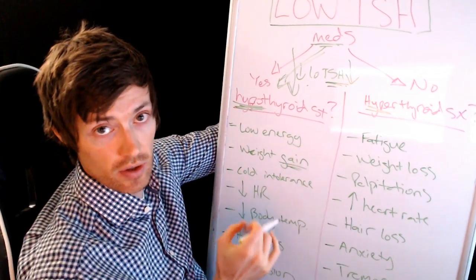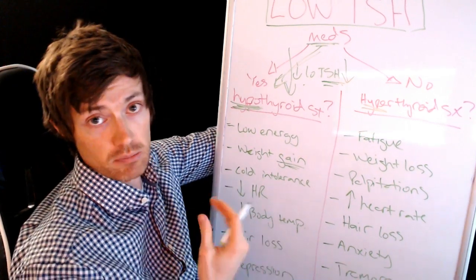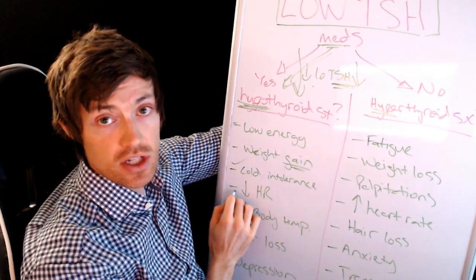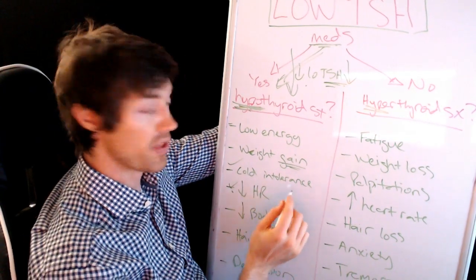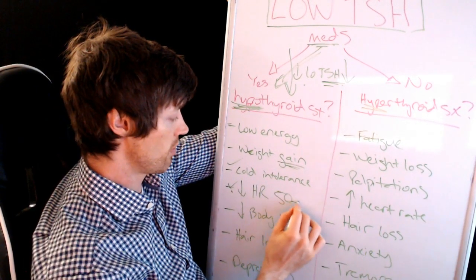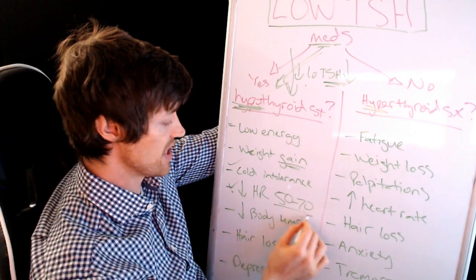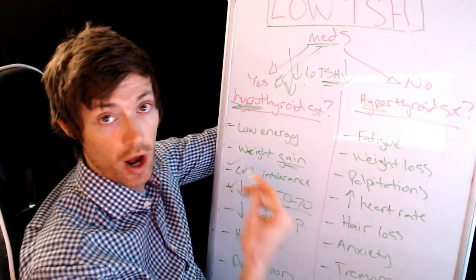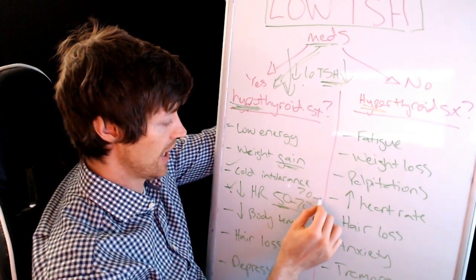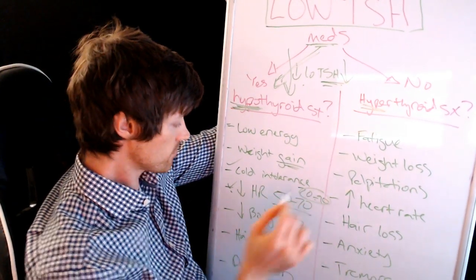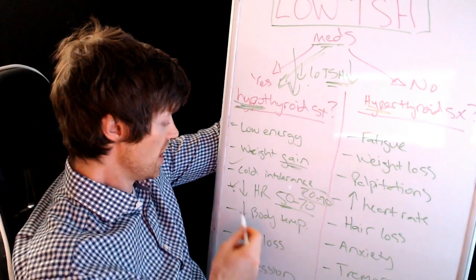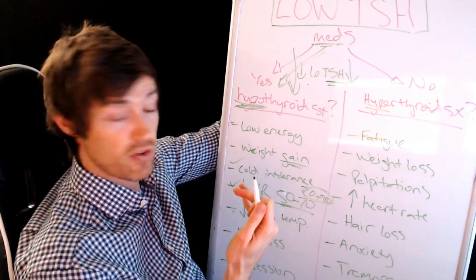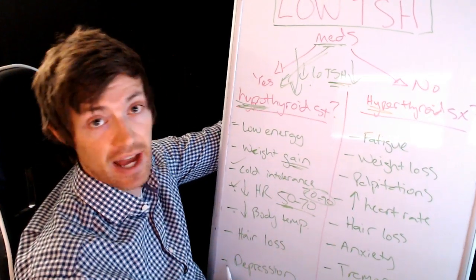You might have cold intolerance. So if the air conditioning blows on you, you can't tolerate that cold. You might have a decrease in your heart rate. Very important, a drop in the heart rate. So people with hypothyroidism tend to have a heart rate somewhere between the range of 50 to 70, maybe even in the low 50 range. Whereas normal when you're up and awake is somewhere between 70 and 90. So this would be normal. Obviously it goes a lot higher if you exercise. You're going to have a low body temperature as well. You might be experiencing hair loss or your hair falling off of your head. And then of course you might have depression.